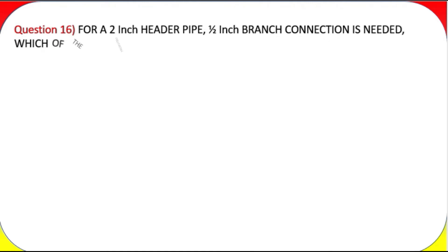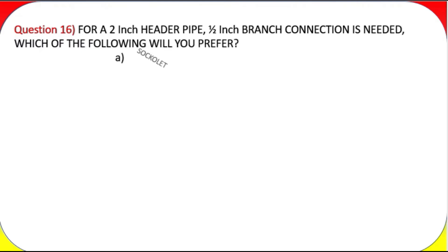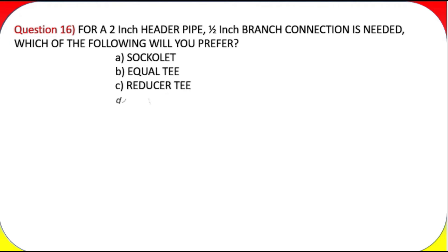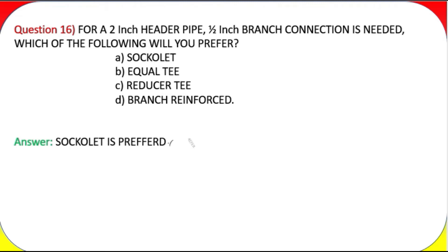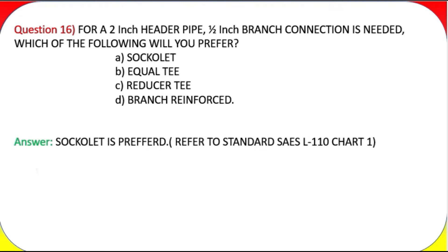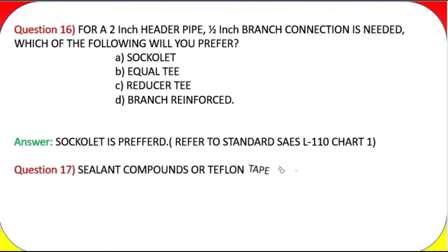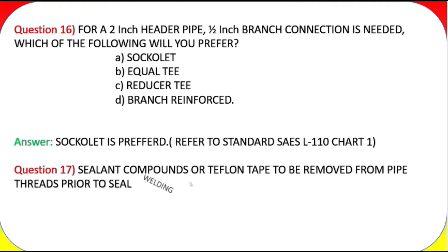Question 16: For a 2-inch header pipe, a 1/2-inch branch connection is needed — which of the following will you prefer? (a) sockolet, (b) equal tee, (c) reducer tee, (d) branch reinforced. Answer: Sockolet is preferred. Refer to standard SAES-L-110, Chart 1.